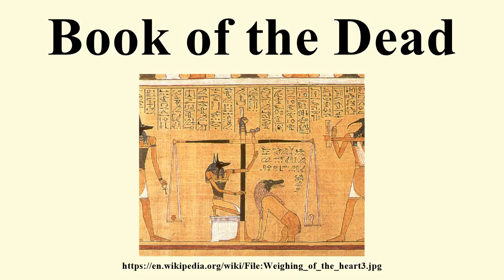The coffin texts used a newer version of the language, new spells, and included illustrations for the first time. The coffin texts were most commonly written on the inner surfaces of coffins, though they are occasionally found on tomb walls or on papyri. The coffin texts were available to wealthy private individuals, vastly increasing the number of people who could expect to participate in the afterlife — a process which has been described as the democratization of the afterlife.